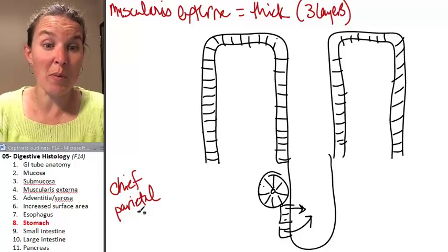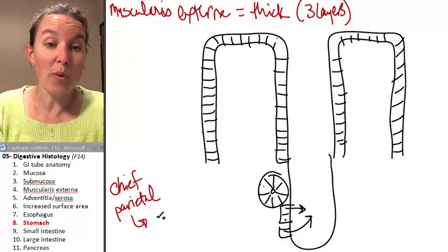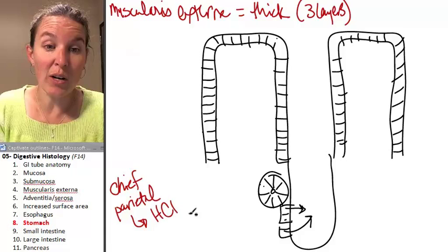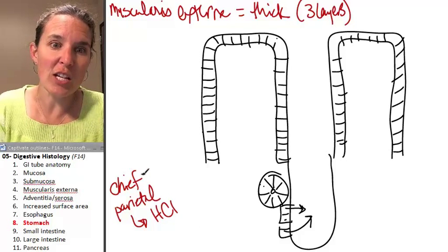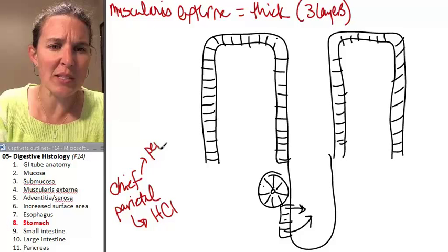And I have to write both of them down to remember what they do. The parietal cell produces hydrochloric acid. The chief cell produces a substance called pepsinogen.